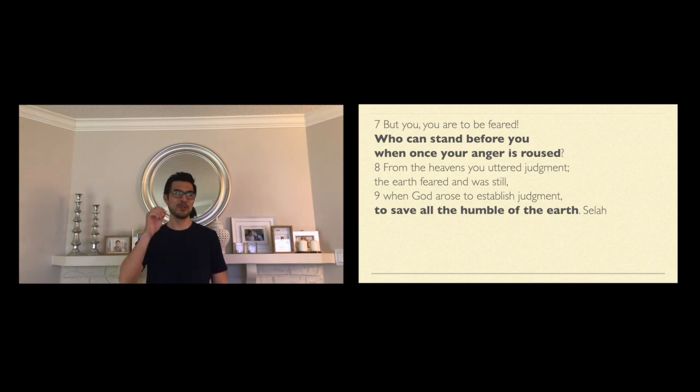But there's hope there, because we know that the answer—the one person who can stand before God when his anger is roused—and in verse nine when God arose to establish judgment to save all the humble of the earth, we know that the humblest man on earth was Jesus Christ. He's the one person that can stand before God when his anger is roused. In fact, he has stood there for you and me, shielding us from God's anger so that we can experience all the goodness of God's providence.